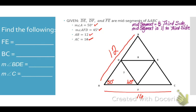The first thing we're going to find is the length of FE. FE is a mid-segment opposite side AB, which is 12. A mid-segment is one half the length of the third side, so it has to be half of 12. The length of FE is 6.